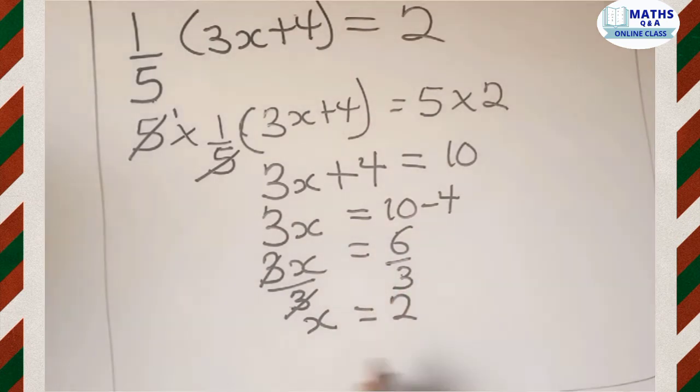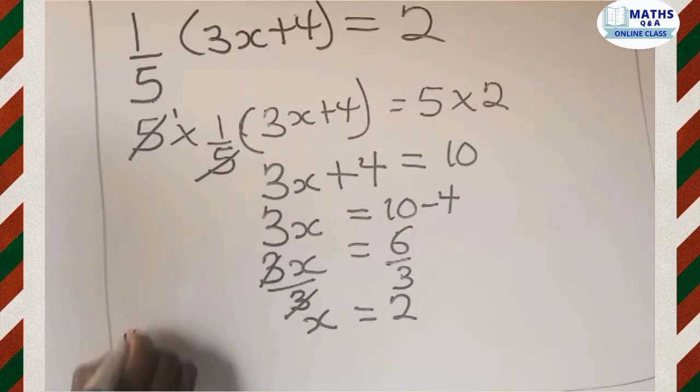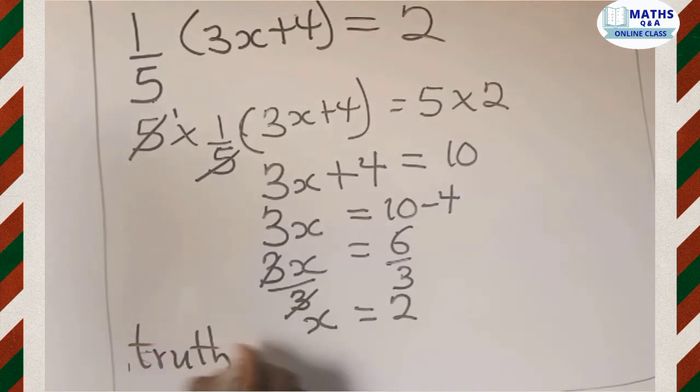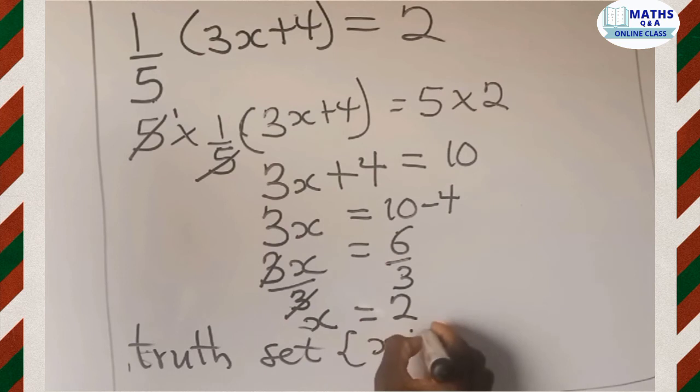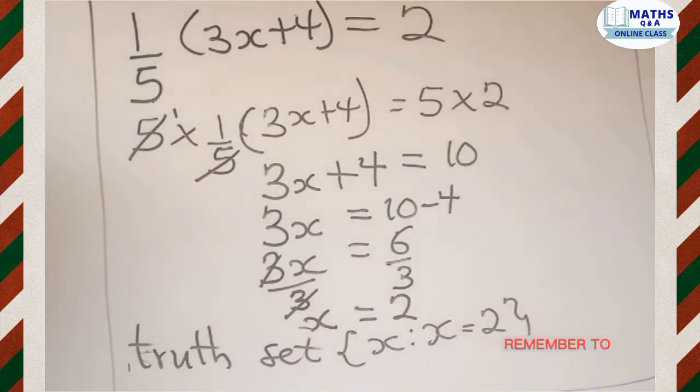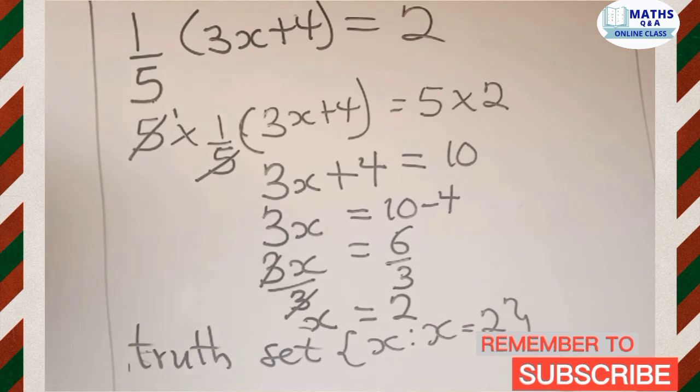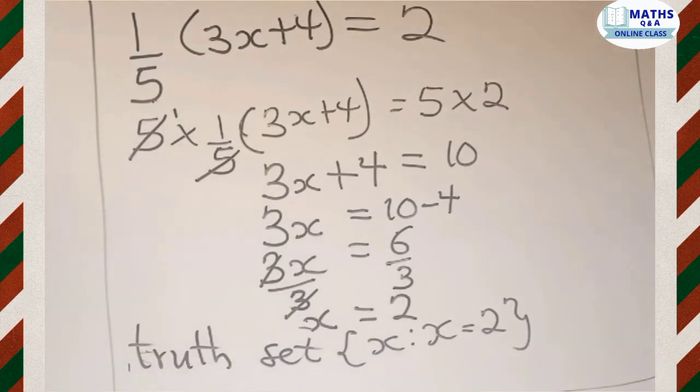So this becomes our answer for the question given. Now let's write the truth set of the answer that we are having here. The truth set is written as x such that x is equal to 2.